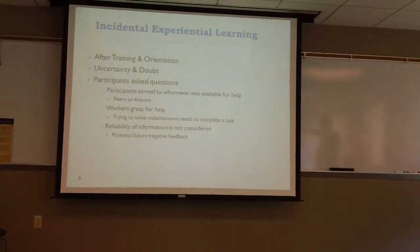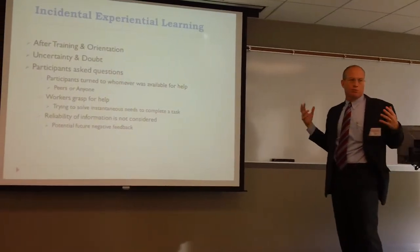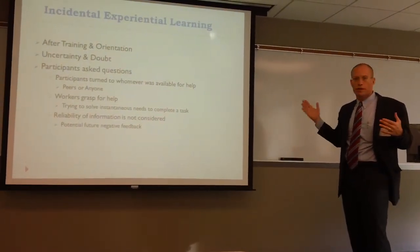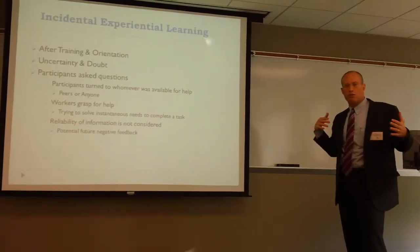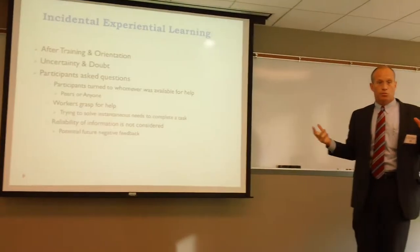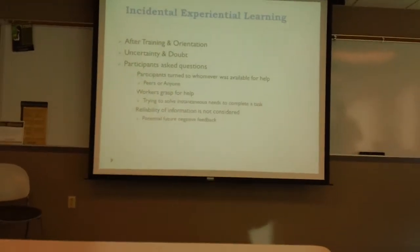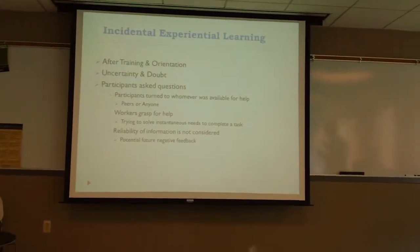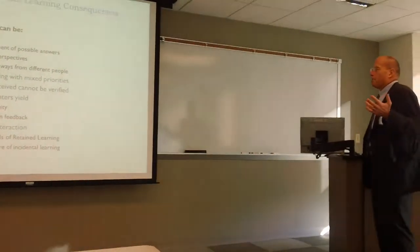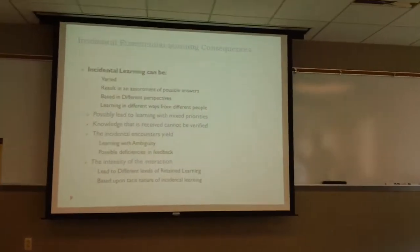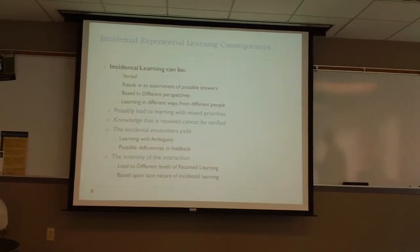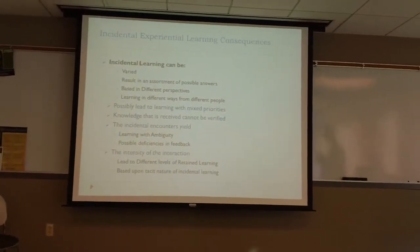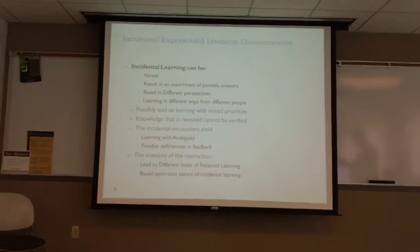We created a job description that said this is what they were supposed to do. It didn't really matter—the reliability of the information wasn't even considered. They just were trying to get their work done. Even if there was potential future negative feedback from their supervisor, they didn't generally go to their supervisor. They just tried to do it. With all these transactions occurring, you can see how errors would start to occur, because the learning would be very varied with all sorts of different answers.